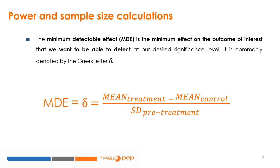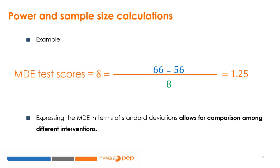The MDE is the difference between the means of the outcome of interest between the treatment and control group, expressed in terms of the pre-treatment standard deviation of the outcome for both groups. For example, in an educational intervention designed to improve test scores, we know from previous data that mean scores are 56 points. Based on related literature, we expect the intervention to raise mean scores of the treated group by 10 points, and the standard deviation of test scores is 8 points. Therefore, the minimum detectable effect is equal to 1.25 standard deviations. Expressing the MDE in terms of standard deviations allows for comparison among different interventions.